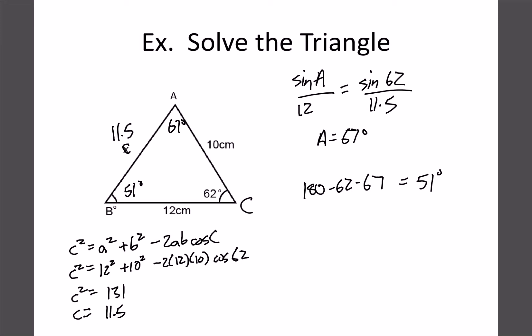Quite often you'll need to use the cosine law just once. Once you've found that first missing piece, the sine law and the 180° angle rule are usually sufficient to finish solving the triangle. And that's all.